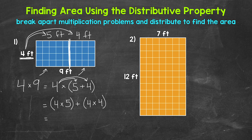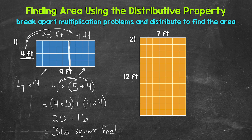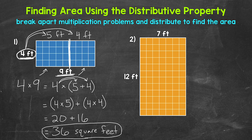Now let's multiply. 4 times 5 gives us 20, plus 4 times 4, which gives us 16. So now we have 20 plus 16, which gives us 36. And since we're working with feet and this is area, that's 36 square feet — our final area. To recap: we took 9 feet and broke it apart into 5 feet and 4 feet. We distributed 4 feet to 5 feet and 4 feet. 4 feet times 5 feet gave us 20 square feet, and 4 feet times 4 feet gave us 16 square feet. 20 plus 16 gave us that total area of 36 square feet.